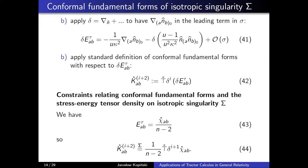With the tensorial object ΔE_τ at hand, I can apply the definition of conformal fundamental forms: the (i+2)-th conformal fundamental form is defined as the trace-free projected part of Δ^i applied to ΔE_τ — that's the right-hand side of equation 42. Recalling the relation between E_τ and the trace-free part of the stress-energy tensor (equation 43), I can write a general constraint equation: the (i+2)-th conformal fundamental form of the boundary equals (1/(n−2)) times this operator applied to the stress-energy tensor density — equation 44.